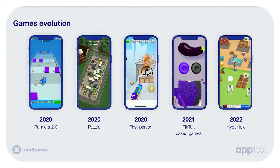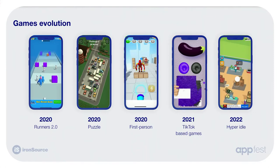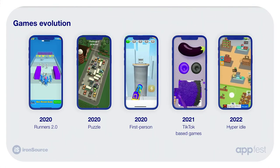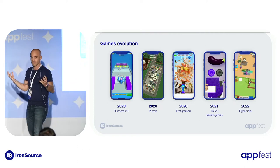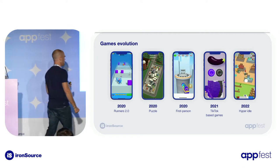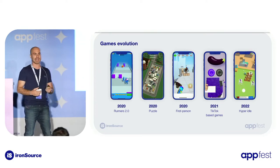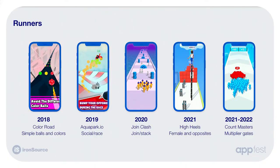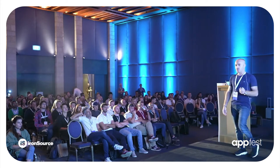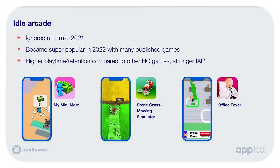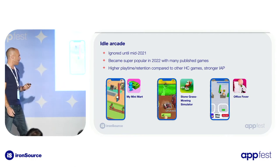It keeps evolving with Runners 2.0, evolving mechanics, puzzle games, first-person action, and TikTok-based games. During COVID, TikTok grew a lot, and suddenly people said — if we see a very viral video on TikTok, why not make a game out of it? And it worked. In 2021 we saw millions of successful games coming from TikTok, and in the past year hyper-idle has become very strong in hypercasual. In general, we see that hypercasual became much richer, execution level went up, and this added a lot of value and content for users looking to play hypercasual games.